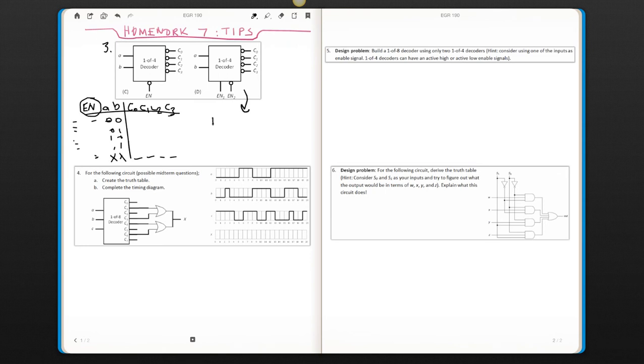If you have two enable signals, you need to know that both enables have to be activated at the same time. So again, the same idea, you don't have to create the whole truth table.